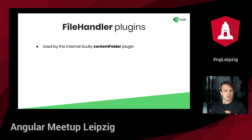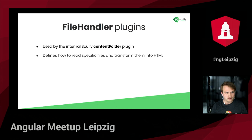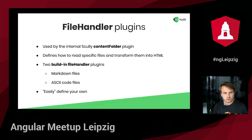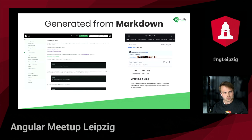The third notable plugin type is the file handler plugin. These plugins are used by the internal Scully content folder plugin and define how to read specific files and transform them into HTML. There are two built-in file handler plugins: the Markdown file handler plugin and the AsciiDoc file handler plugin. If you have any other type of file and the logic to transform its contents into HTML, you can easily define your own — for example, processing CSV files and transforming them into an HTML data table. The Scully homepage is a great example of generating a static Angular website using Scully and Markdown files.